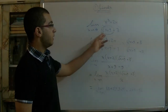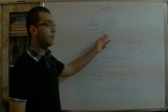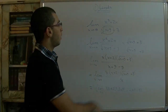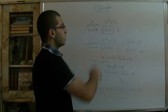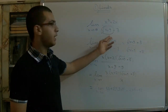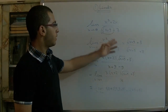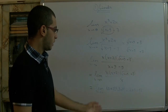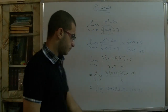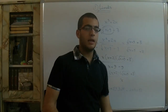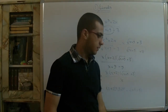So if we have a root in the denominator, we should multiply the whole function by the conjugate of the denominator, as we have done, to get the result instead of getting 0 or an undefined result.